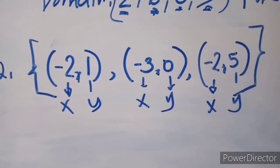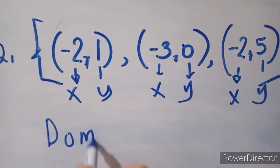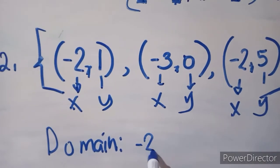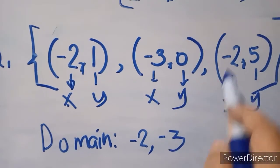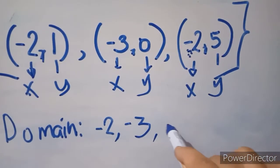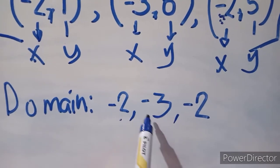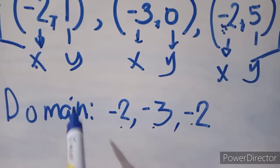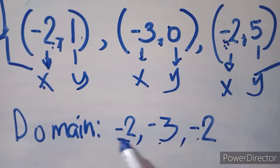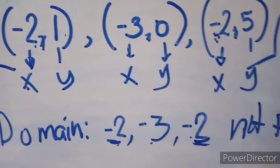We get all the x values — that is the domain. The first x is negative 2, the second x is negative 3, and in the third ordered pair, x is negative 2. So as you can see, the domain or x values are negative 2, negative 3, negative 2. Meaning negative 2 is paired with y twice — negative 2 paired with 1 and negative 2 paired with 5. So if a number is repeated, this is considered not a function. This is not a function.